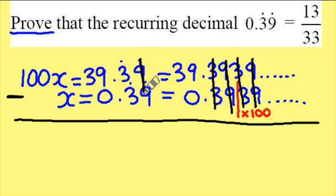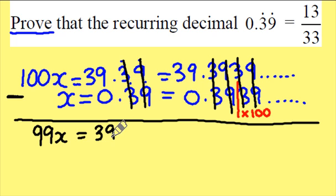This means the recurring component here will also vanish. 100x's take away an x is 99x's. 39 take away nothing is just 39.